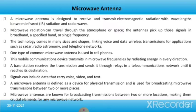One type of common microwave antenna is used in cell phones. This mobile communications device transmits in a microwave frequency by radiating energy in every direction. A base station receives the transmission and sends it through relays in a telecommunications network until it reaches its destination. Signals can include data that carry voice, video, and text. A microwave antenna is defined as a device for physical transmission and is used for broadcasting microwave transmissions between two or more places, making them crucial elements for any microwave network.